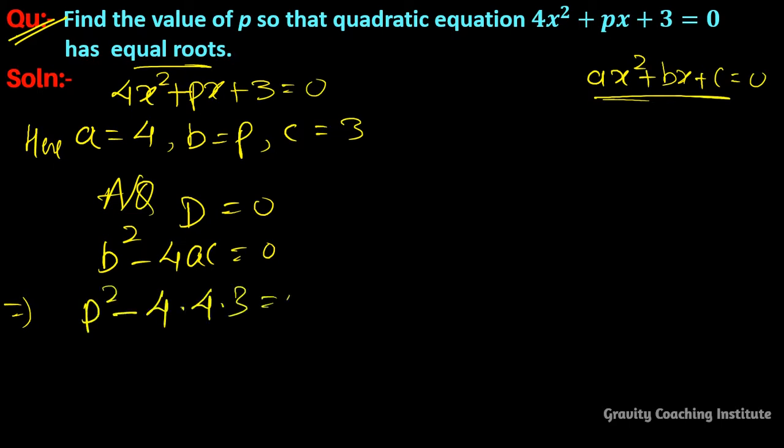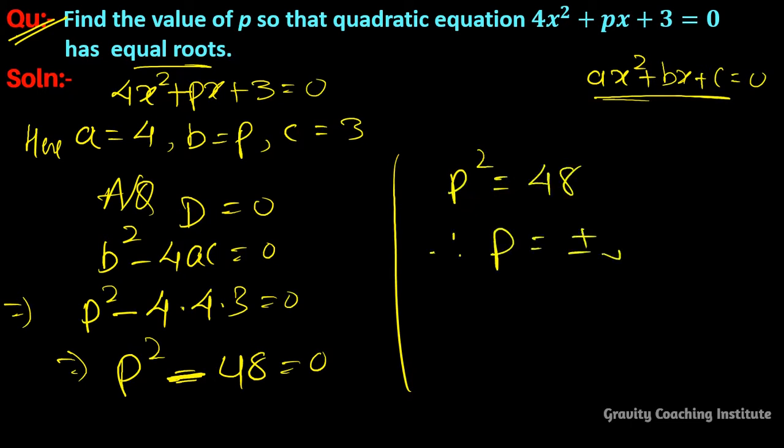So p² - 48 = 0. Therefore p² = 48, so p = ±√48 = ±4√3. Answer.